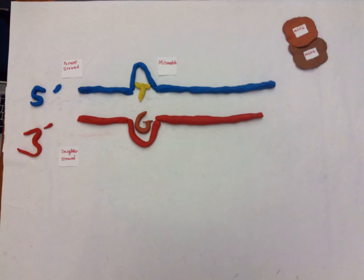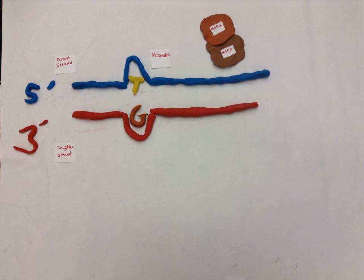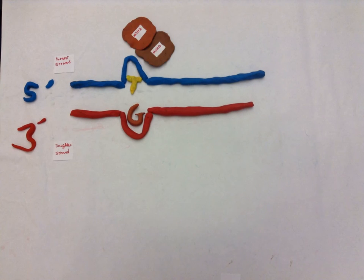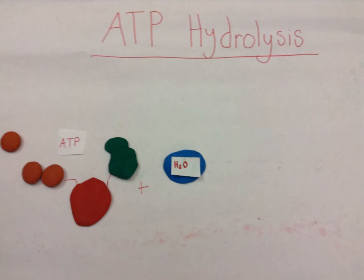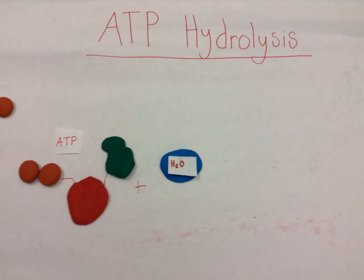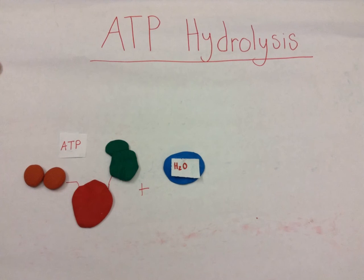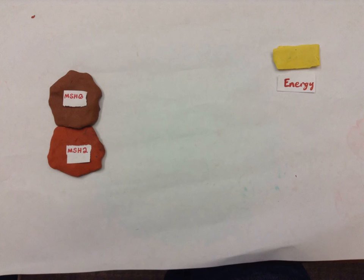Mismatch repair begins with the binding of MSH2-MSH6, two proteins that play significant roles in eukaryotic mismatch repair. The binding of MSH2-MSH6 is powered by the hydrolysis of ATP to ADP. ATP loses a phosphate and this in turn yields energy and produces a conformational change for MSH2-MSH6.